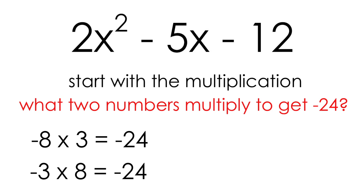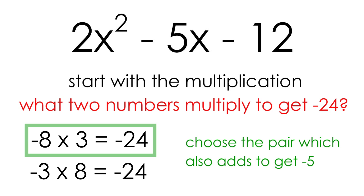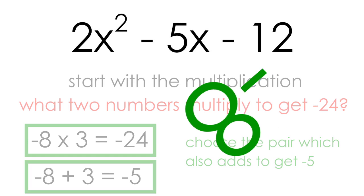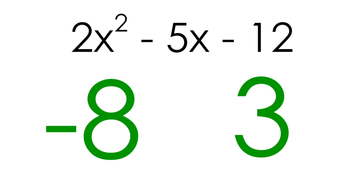Again, I'm going to check to see if it's possible to add either pair of numbers to produce negative 5. In this case, I'm going to choose negative 8 and 3, which have a product of negative 24, but also have a sum of negative 5. So moving forward, I'm going to work with negative 8 and 3 as my two numbers, which have a product of negative 24 and a sum of negative 5.